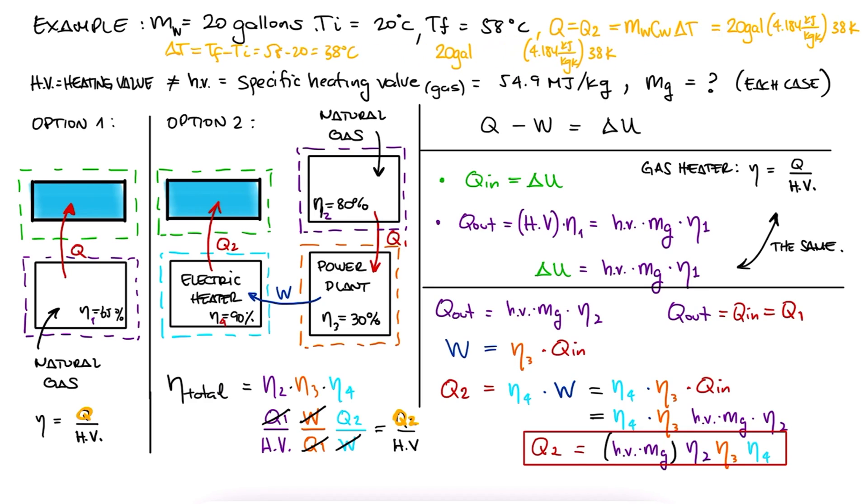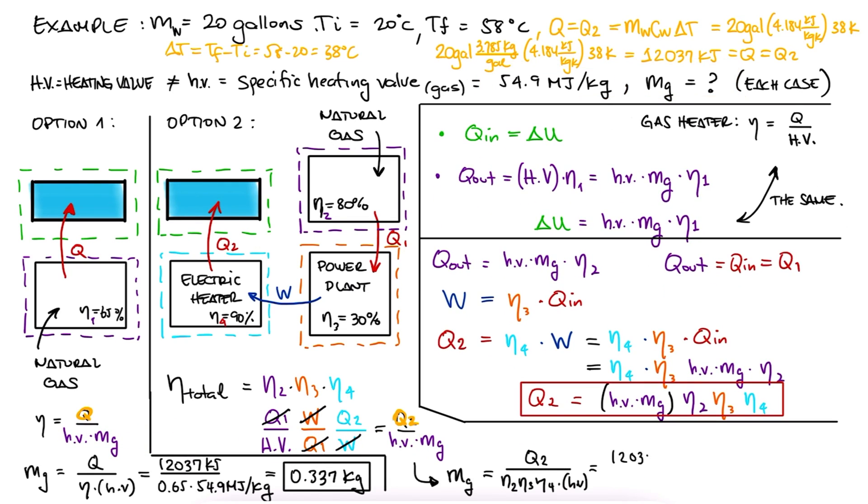After the unit conversion, this heat would be equal to around 12,000 kilojoules. The heating value on the other end is the specific heat value we were given times the mass of the gas we're burning. With this, we can solve for the mass of gas for each type of water heater. Notice that we would be burning a lot more gas if we use an electric water heater, despite the water heater itself being more efficient.